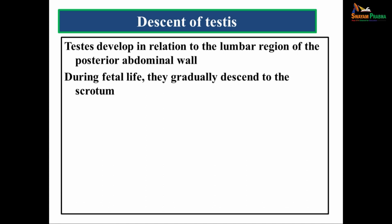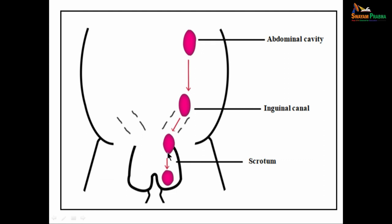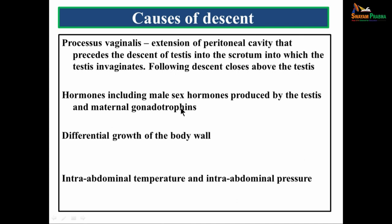The descent of the testes: the testis develops in the lumbar region of the posterior abdominal wall. During fetal life they gradually descend to the scrotum. By the third month it reaches the iliac fossa; by the seventh month it reaches the deep inguinal ring and passes through the inguinal canal; almost by the eighth month it enters the scrotum. The causes of descent include the processus vaginalis, male sex hormones, differential growth of the body wall, intra-abdominal temperature, and intra-abdominal pressure.